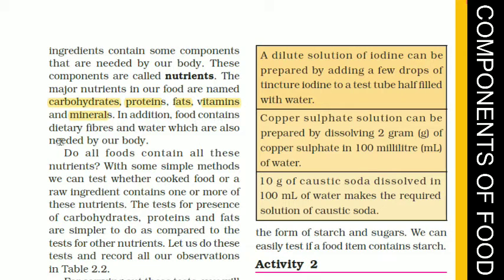In addition, food contains dietary fibers and water, which are also needed by our body. So from our food, we get five nutrients: carbohydrates, proteins, fats, vitamins, and minerals. Dietary fibers and water are also essential for our body.